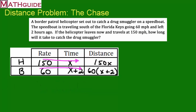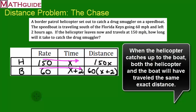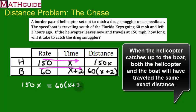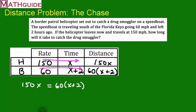The key to solving this problem is understanding how to build an equation. When the helicopter finally reaches the boat, they will have traveled the same exact distance. So when the helicopter's distance, 150X, is equal to the boat's distance, 60(X+2), we know they will have met each other. We now just need to solve this equation for X.